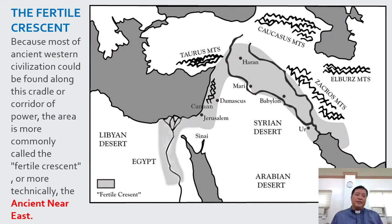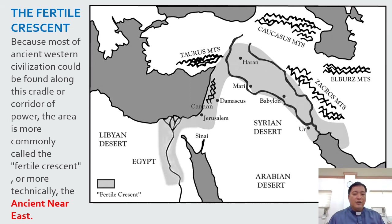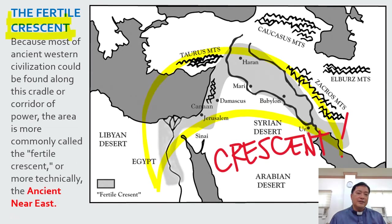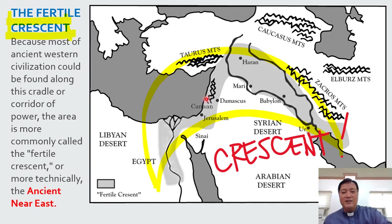This part of the ancient Near East is also called the Fertile Crescent. Because most of the ancient Western civilization could be found along this cradle or corridor of power, the area is more commonly called the Fertile Crescent, or more technically, the ancient Near East — so it's synonymous. The ancient Near East includes the area covered by the Fertile Crescent. You know why it's called 'Crescent'? Look — it's shaped like a crescent.